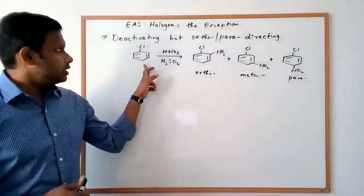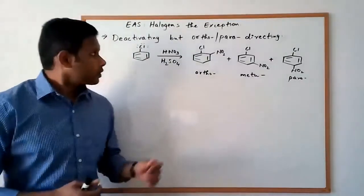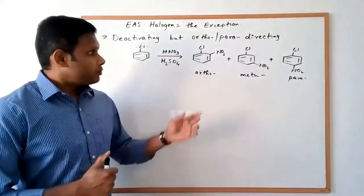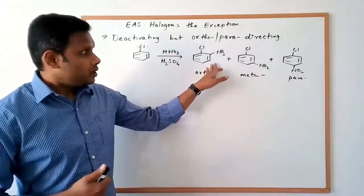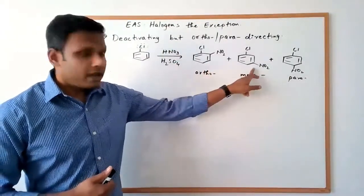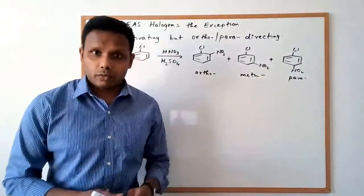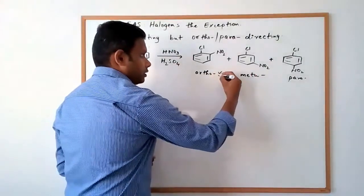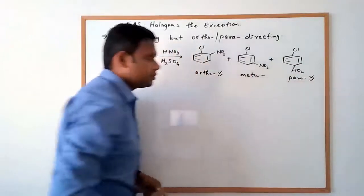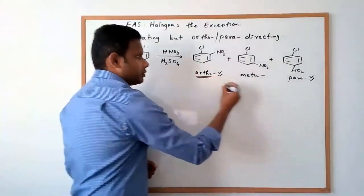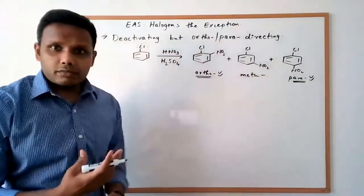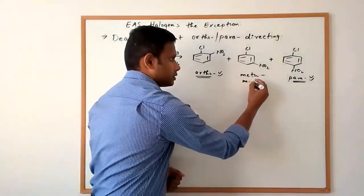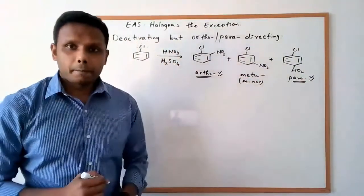For example, if we consider the nitration of chlorobenzene, using the standard nitration conditions of nitric acid and sulfuric acid, we would expect three products: ortho-nitro-chlorobenzene, meta-nitro-chlorobenzene, and para-nitro-chlorobenzene. Among these products, the ortho and the para products are the favored products, while the meta product is not favored — it is always the minor product in this reaction.